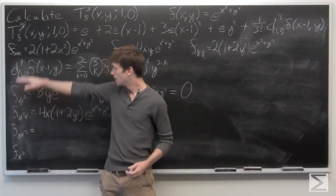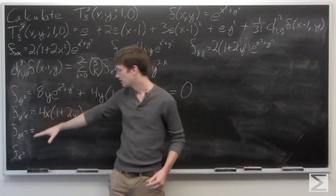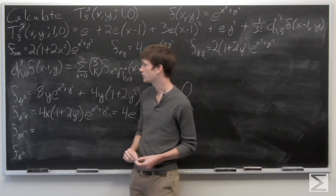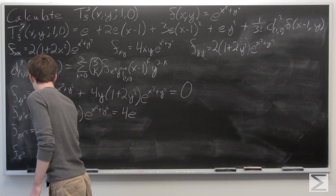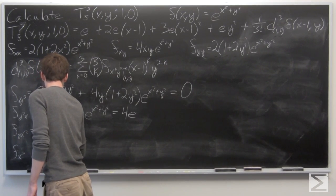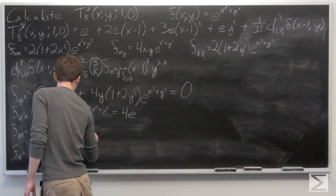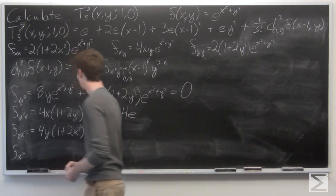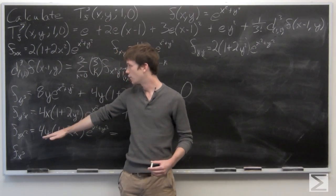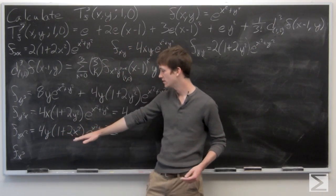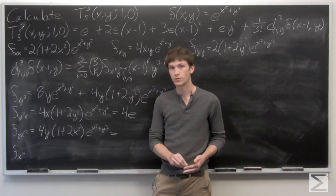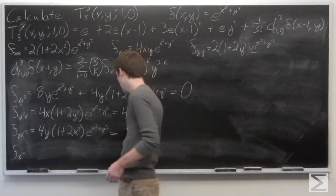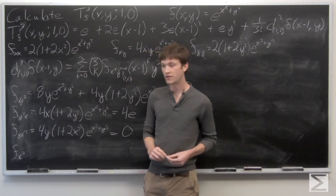Now we take f_xx and compute f_yxx by taking the partial derivative of f_xx with respect to y. We get 4y times the quantity 1 plus 2x squared times e to the x squared plus y squared. The whole term is multiplied by y, so at the point (1,0), our partial derivative is 0.